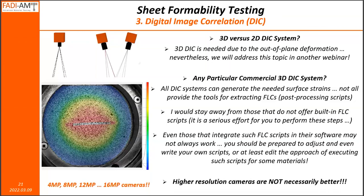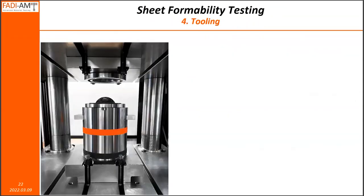One last thing: there is always a push for new systems with better cameras — we used to work with four and five megapixel cameras, and now we hear about 12 and 16 megapixel cameras. We want to emphasize this simple point: higher resolution cameras do not necessarily mean you're going to get better results. In fact, sometimes it's a drag and doesn't really help in terms of the measurement resolution or the accuracy of the FLC that you're going to generate. So you just need to be careful in regards to that.